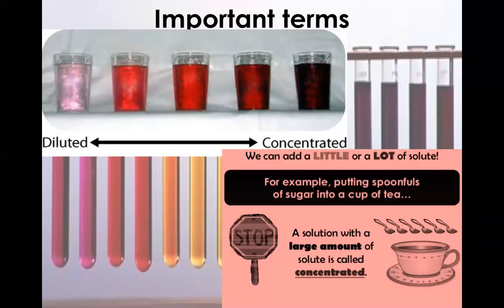For example, if one student is drinking tea and adds one teaspoon of sugar, we say his tea is diluted. But if another person adds five to six spoons of sugar, we say his tea is more concentrated because it has more solute in it. The first person's tea is quite diluted whereas the second one's tea is concentrated.